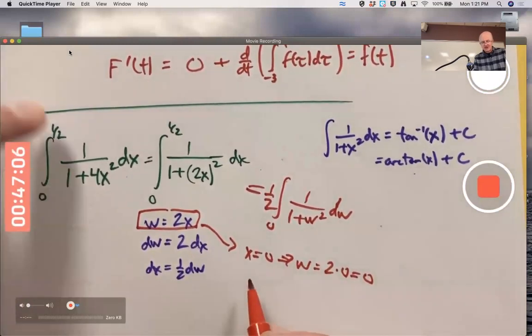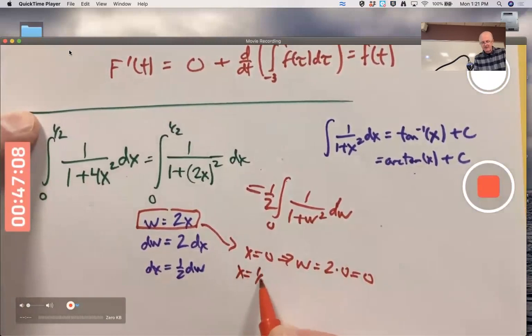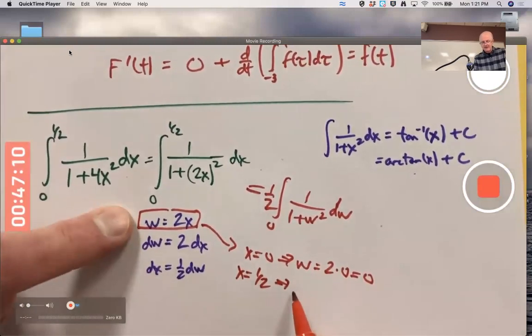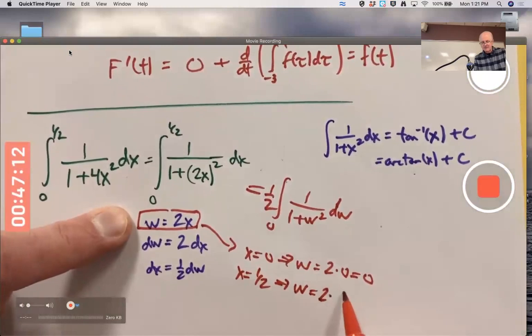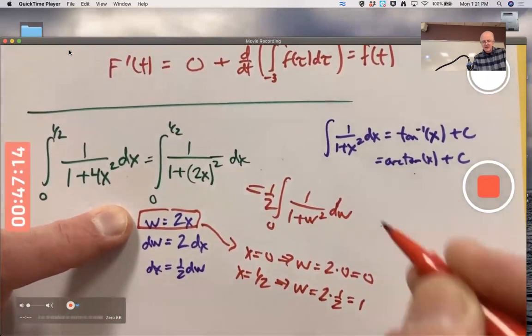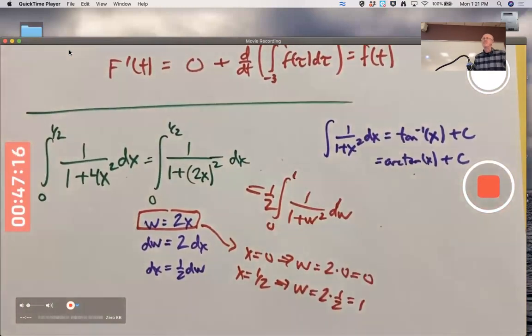But the upper limit does change. The original upper limit is ½. If I find the corresponding w, I do 2×½ = 1, so I changed the upper limit to 1. You must change the upper limit to 1 to get full credit here on this kind of problem.